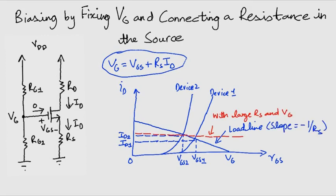The corresponding differences in the current will be smaller. Let's take a look at an example to understand how this biasing technique is beneficial.